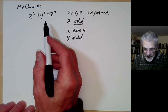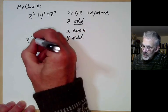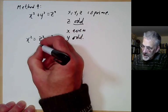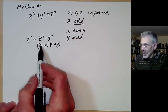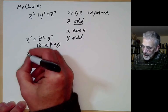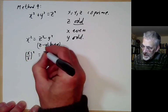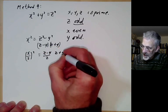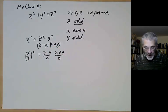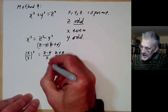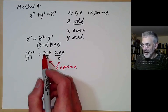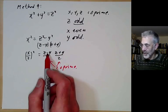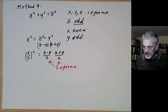We factor: x squared equals z squared minus y squared equals (z minus y)(z plus y). Because z is odd and y is odd, we can take out a factor of 4, getting (x/2) squared equals (z minus y)/2 times (z plus y)/2. These two factors are actually co-prime: since z and y are co-prime, the only common factor of z minus y and z plus y could be 2, but we've already taken that out. And their product is a perfect square.